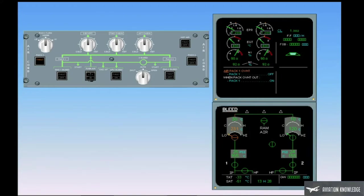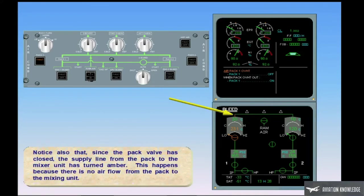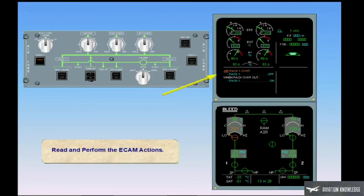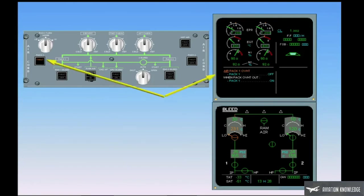Notice also that since the PAC valve has closed, the supply line from the pack to the mixer unit has turned amber. This happens because there is no air flow from the pack to the mixing unit. Read and perform the ECAM actions. The first step on ECAM directs you to turn off PAC-1. This is to match the PAC switch and PAC valve position and prepare to reset the pack. Note that the fault light on the pack push-button switch is illuminated to help you locate it and indicate the overheat condition. Switch off PAC-1.